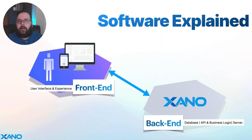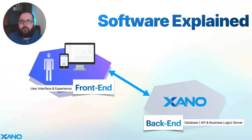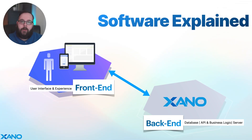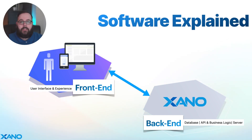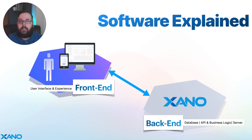I want to take a minute and talk very briefly about the software development process — what do you actually need to have a fully functional application? We need a front end: the user interface and user experience of the application, what it looks like and what users can click on and interact with. We also have the back end, which powers all of the functionality — that's your database, your APIs and business logic, and the server and infrastructure that holds all of those pieces together.